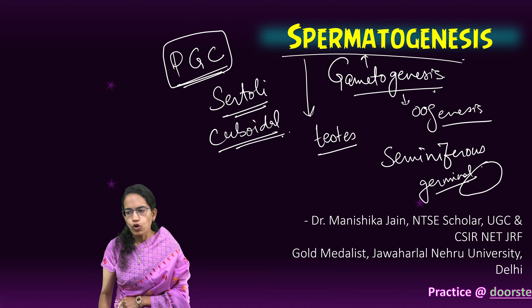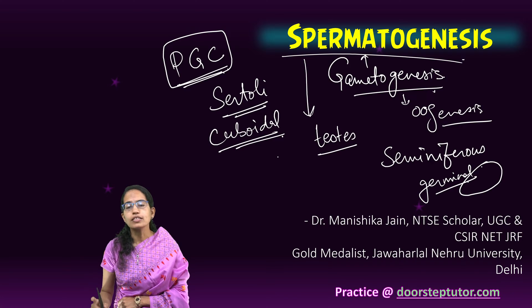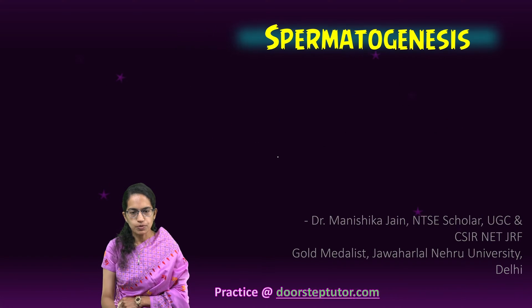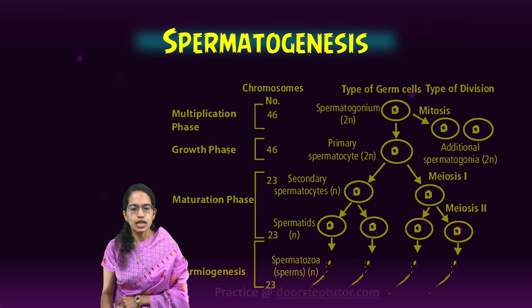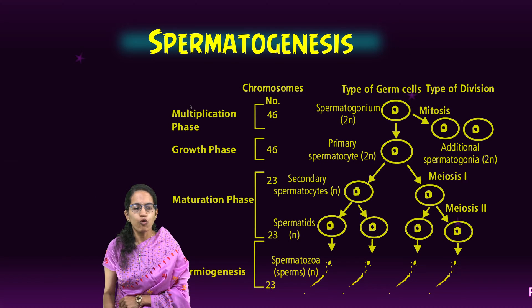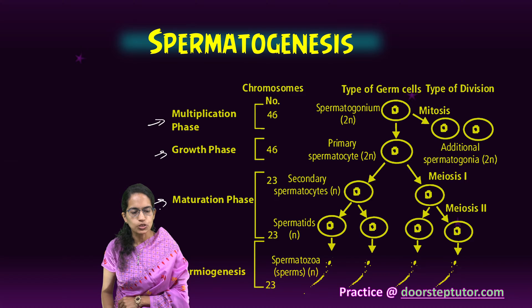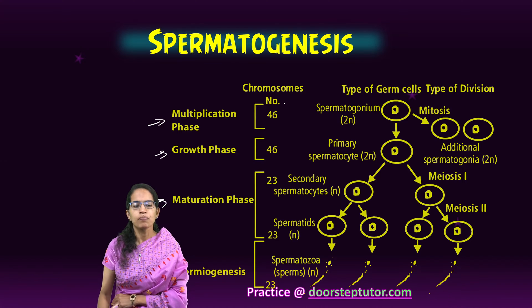Four sperms are produced from one spermatogonial cell, and the process of spermatogenesis undergoes four different major phases. Those are: multiplication, growth, maturation, and spermiogenesis.